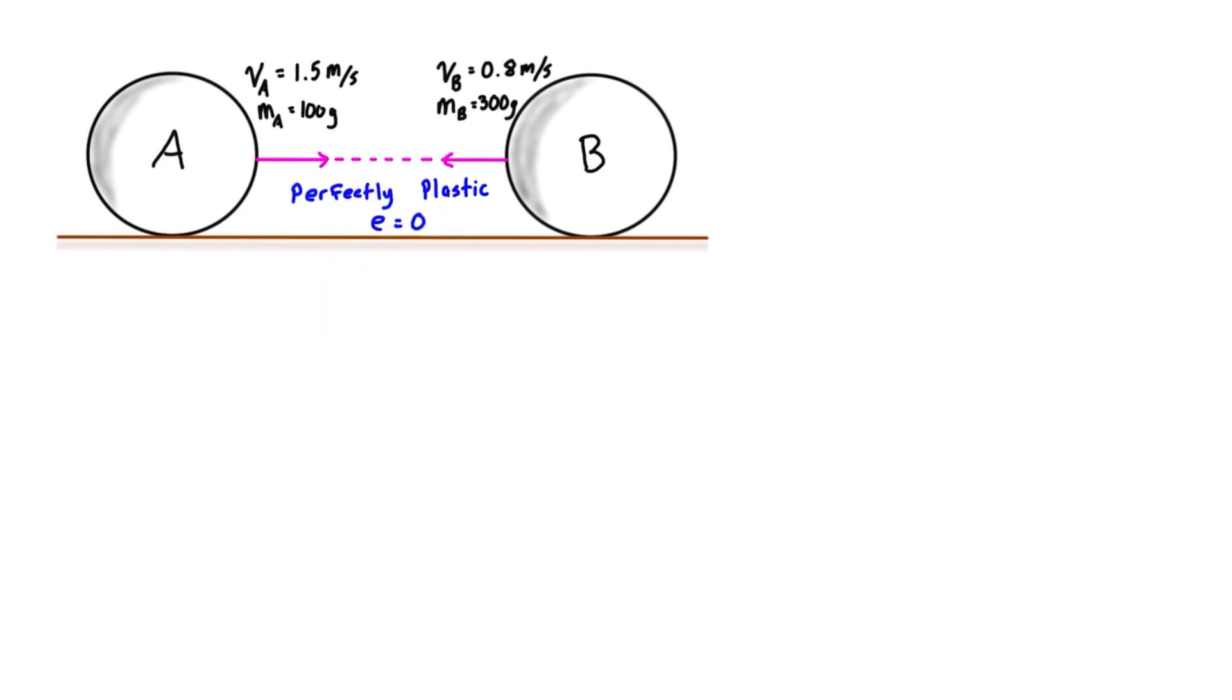Let's write our equation for conservation of momentum, which in this case is going to be the mass of A times its initial velocity VA1 plus the mass of B times its initial velocity VB1.